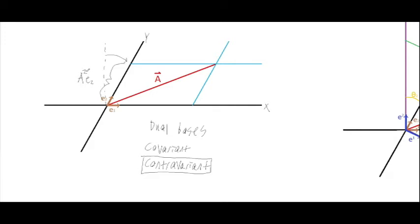When doing contravariant, the component a has its index in the superscript while the basis has it in the subscript. We do the same thing for the x-component: we shine a light parallel to our y-axis and find where the shadow of our vector falls on the x-axis, giving us a¹ e₁ — our x-component for this vector a. That is the contravariant components.